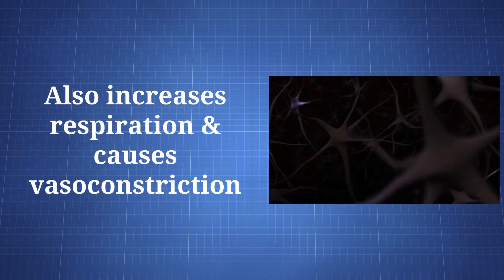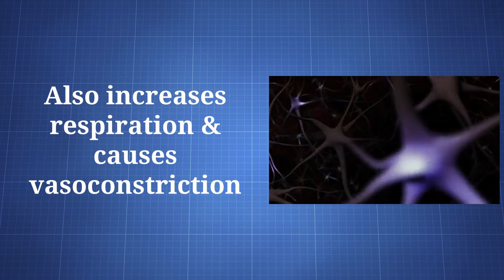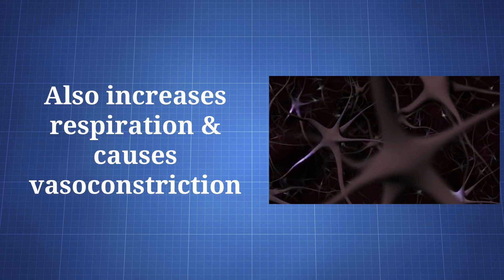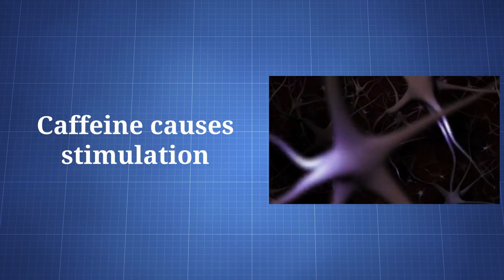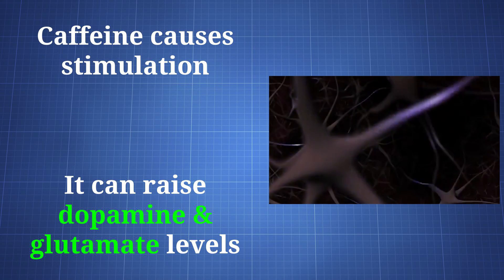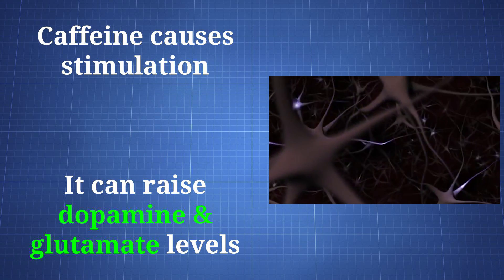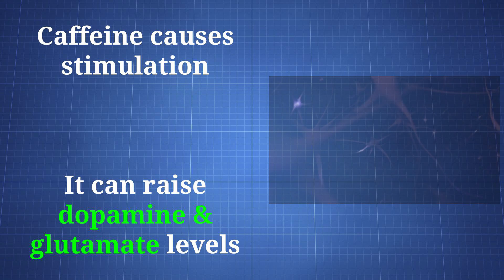The antagonism also ends up increasing respiration, causing vasoconstriction, and other things. Beyond getting rid of drowsiness, caffeine also provides stimulation through its adenosine antagonism. It's able to increase dopamine, glutamate, and other chemicals that can contribute to stimulation.